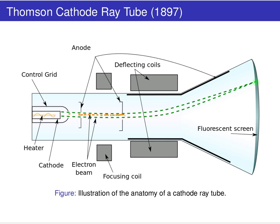He found that the path of particles coming out of that sample can be subject to bending by putting in a magnetic field or an electric field — he did both.